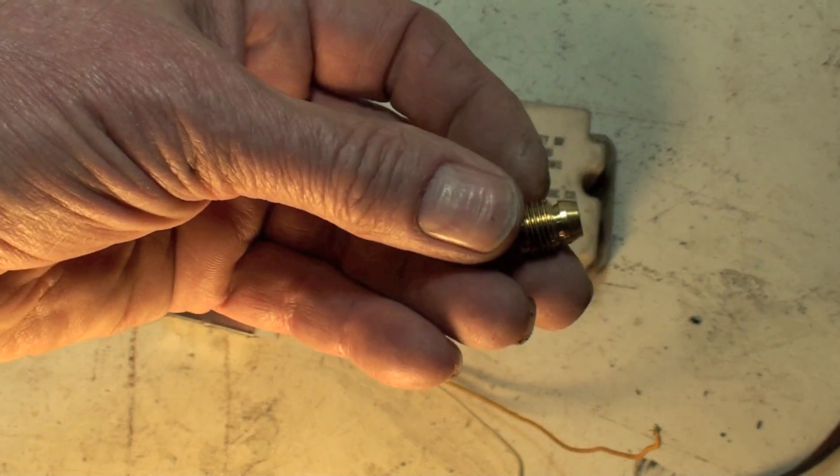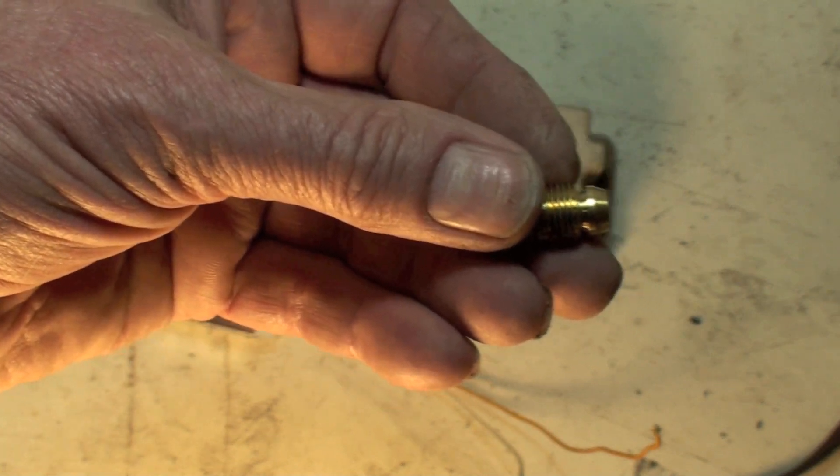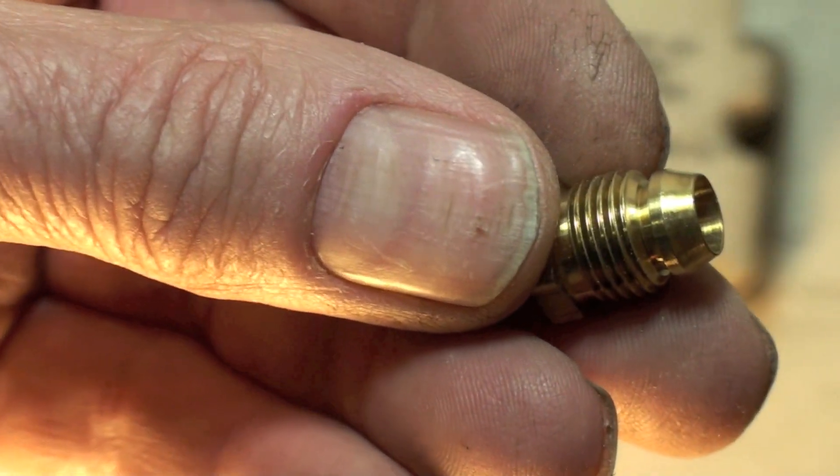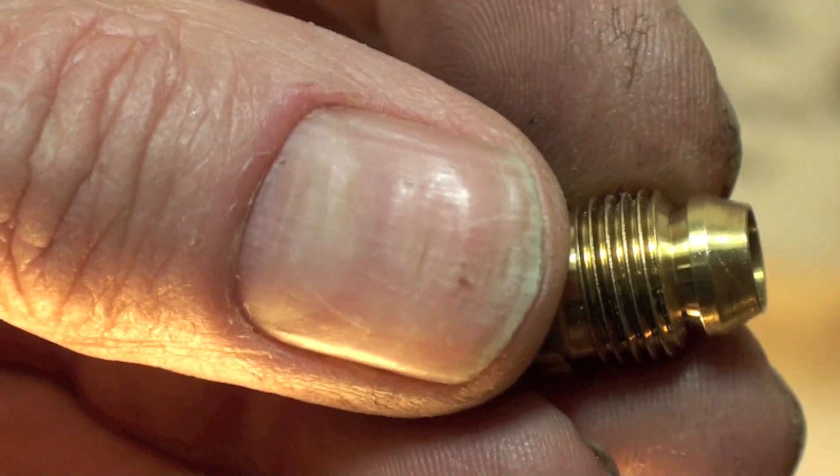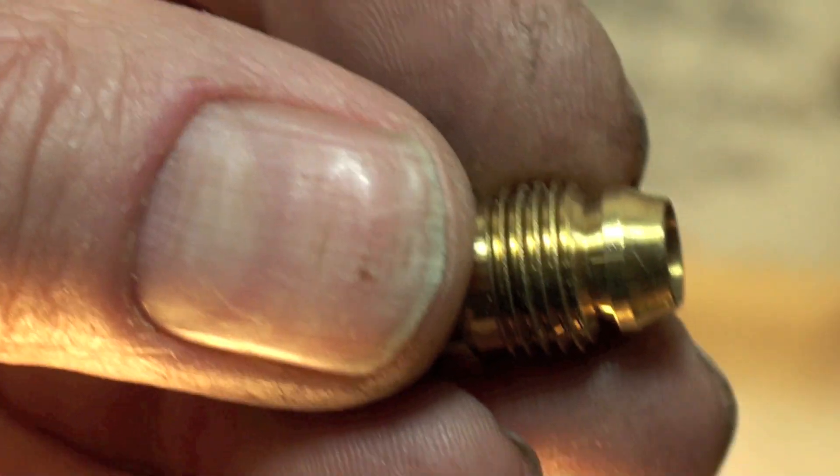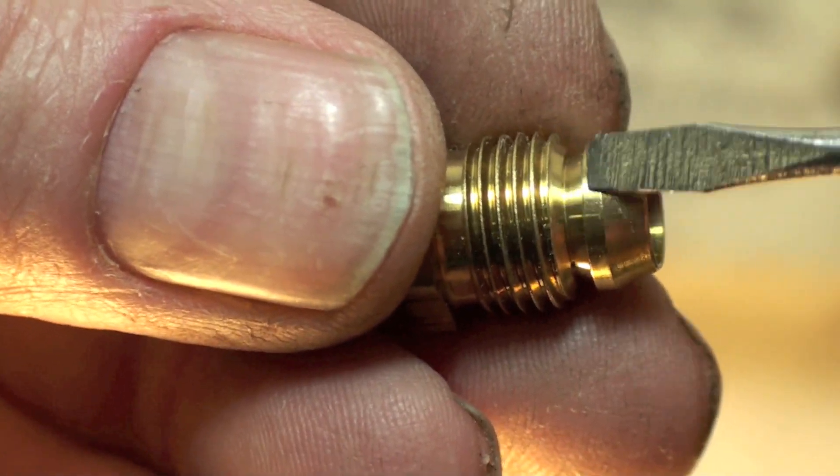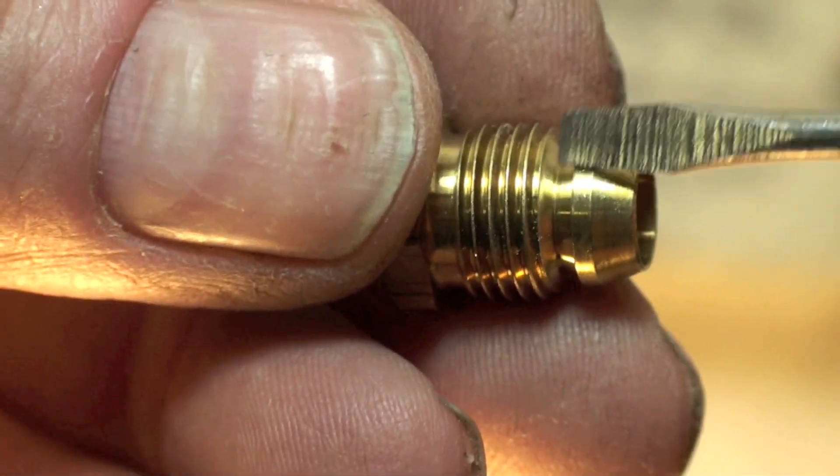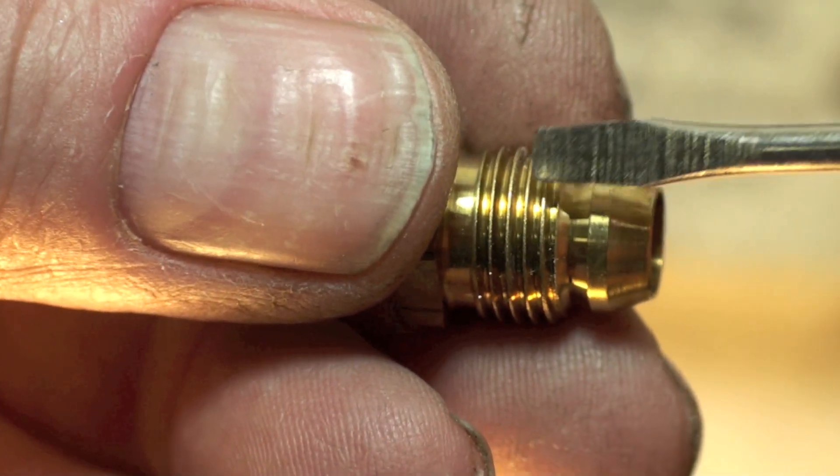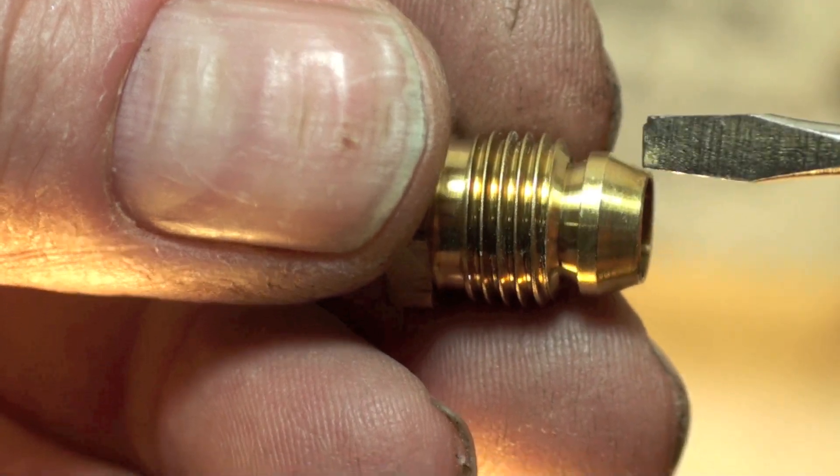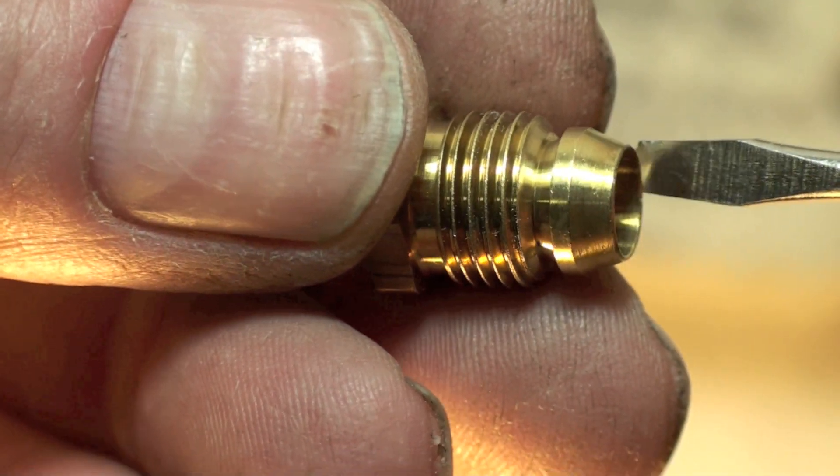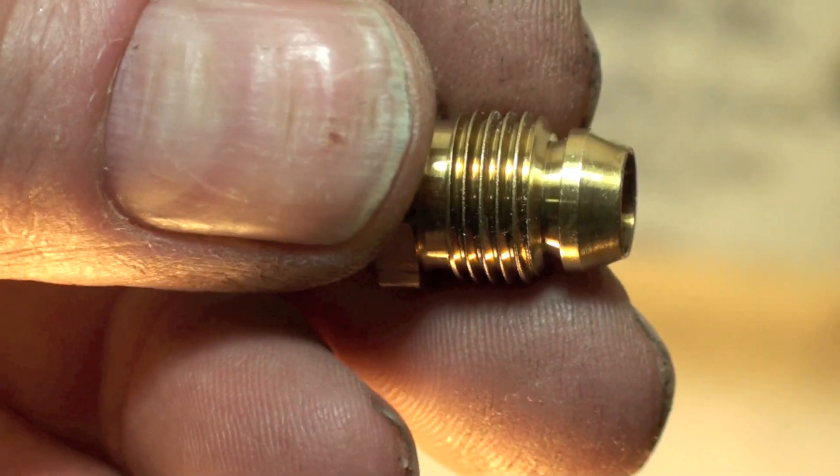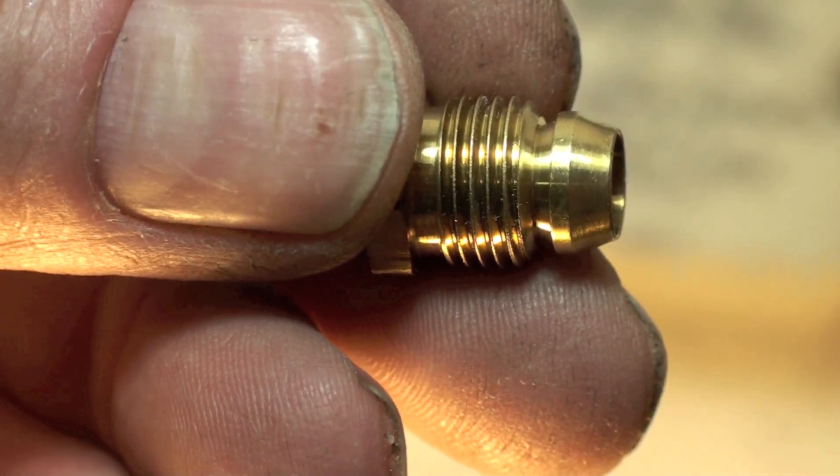If you can't get it to seal, let me see if I can get a little closer. A little bit of pipe dope right here. Just a little bit, not very much. You can put it on the threads if you want. It doesn't seal the threads but it'll make them move a little smoother. But a little bit of pipe dope right there will sometimes seal it when they don't want to seal.